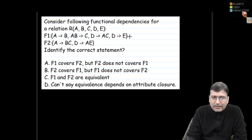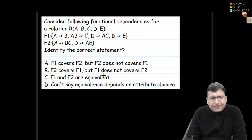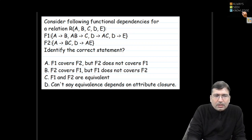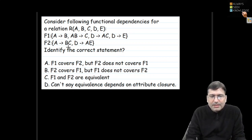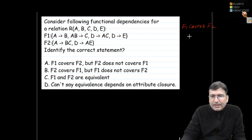Consider the following functional dependencies: F1 is one set and F2 is another set. We need to check whether F1 and F2 are equivalent, or F1 covers F2, or F2 covers F1. If F1 covers F2, then all functional dependencies of F2 must be satisfiable using the functional dependencies given in F1.